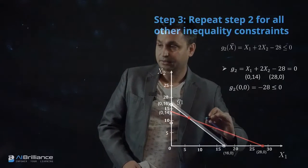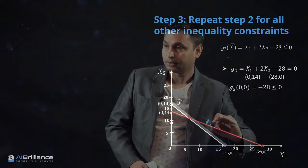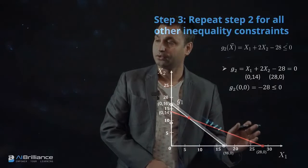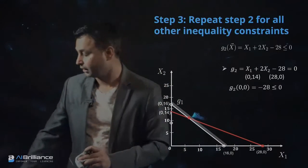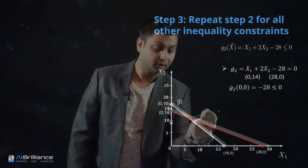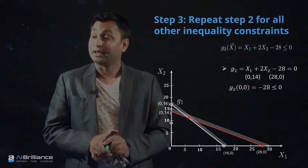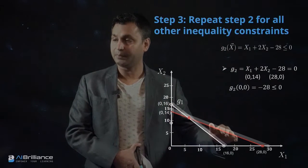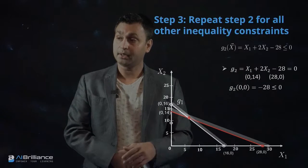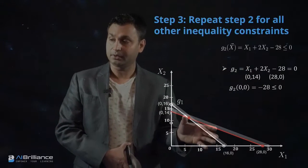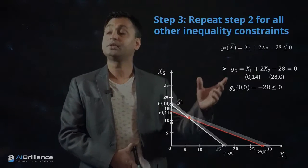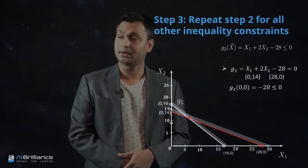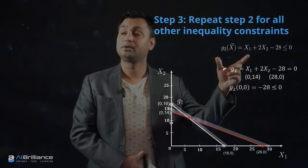We shade out (hatch) the infeasible region on the far side of the red line. This graphically illustrates the G2 constraint — the boundary line separates the infeasible area from the feasible area. We have now plotted two inequality constraints, G1 and G2, simultaneously on a single plot.